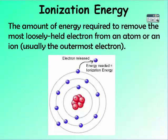Ionization energy is the energy required to remove the most loosely held electron from an atom or an ion. Usually this is the outermost electron or the valence electrons. So ionization energy is the energy needed to remove an electron.